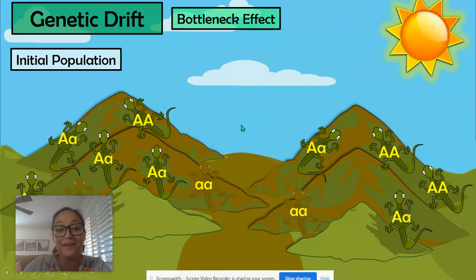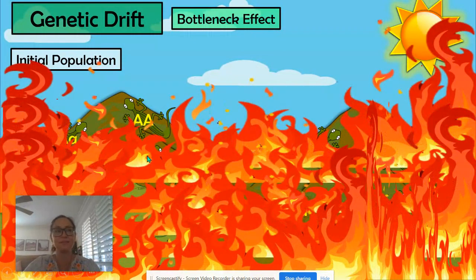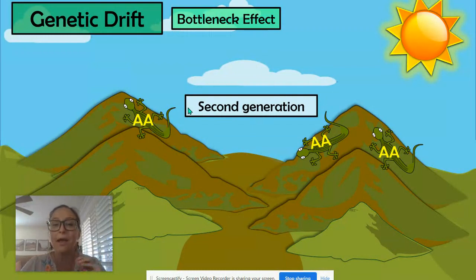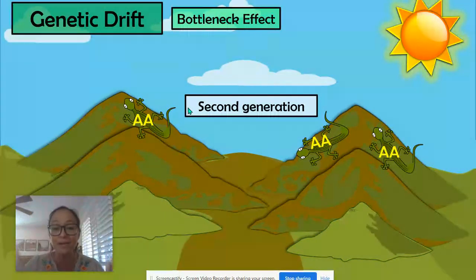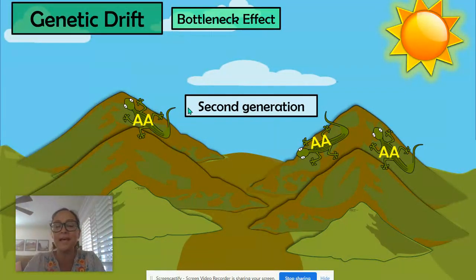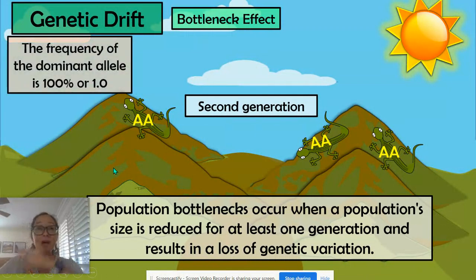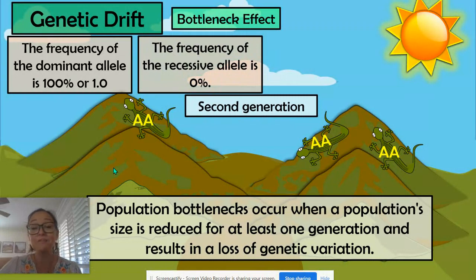Let's talk about the bottleneck effect. Let's pretend there is a natural disaster — a massive forest fire occurs. In that second generation, a whole lot of the original population died off and there are only a few survivors. Who survived was not dependent on fitness and was not based on phenotype — it was random who survived. It just so happens the survivors were homozygous dominant lizards by chance. You can see how that allele frequency changed — the dominant allele is now 100% of the gene pool instead of 0.5, and the recessive allele is 0%. This was a random event.